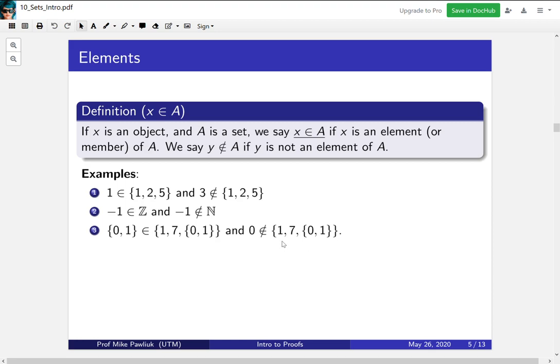This set right here has three things. 1, 7, and this set. Zero is not one of those three things. This hints at some of the confusion that can happen when you have sets inside of sets.